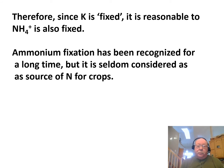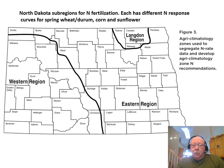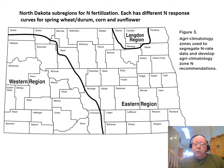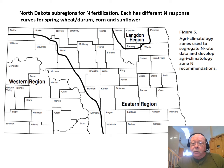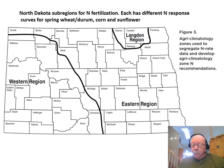Therefore, since potassium is fixed, it's reasonable to expect that ammonium is fixed also. It's been recognized for a long time that there's ammonia fixation, but we seldom think about it as a source of nitrogen for crops. I do consider it for part of North Dakota — in the eastern region, I subdivided out the Langdon region because when I combined data to revise wheat recommendations 10 years ago, the Langdon area was unique in that it took a lot less nitrogen than the rest of eastern North Dakota. It turns out that area is very shaley — every time you take a soil sample, you pick up bits of shale, and it's relatively shallow to bedrock shale.